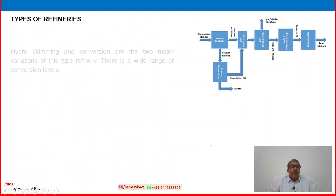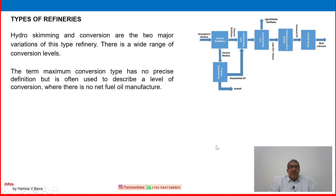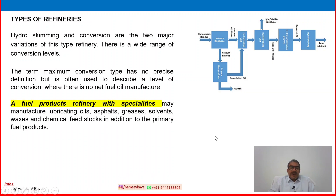The type of refinery will continue. Hydroskimming and conversion are two major variations for this refinery. In a basic refinery, some more advanced processes are involved — hydroskimming and conversion. There is a wide range of conversion levels. The term 'maximum conversion type' has no precise definition, but it is often used to describe a level of conversion where there is no net fuel oil manufacture. A fuel oil product refinery with specialties may also manufacture lubricating oil, asphalt, greases, solvents, waxes, and chemical feedstock in addition to primary fuel products.